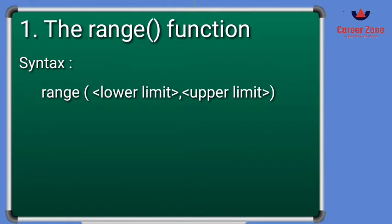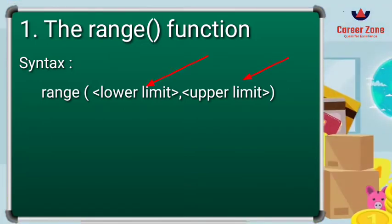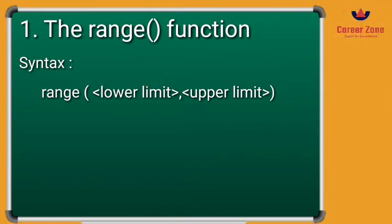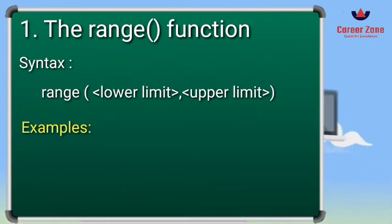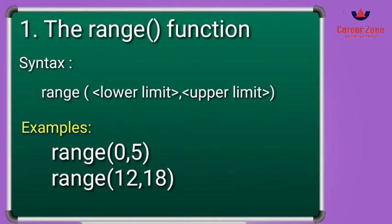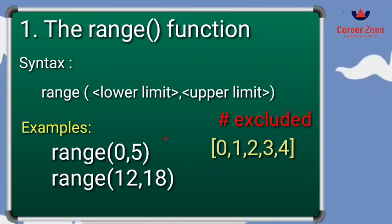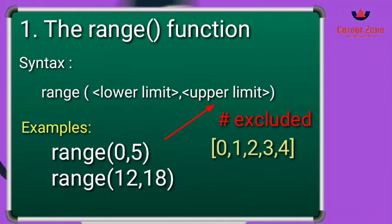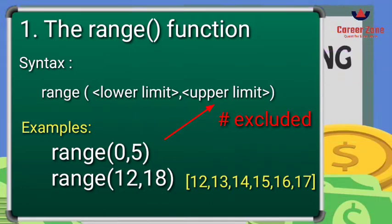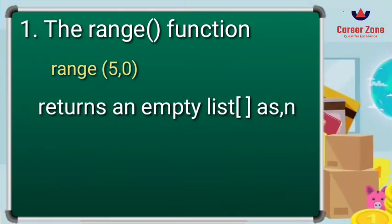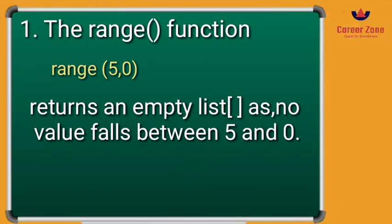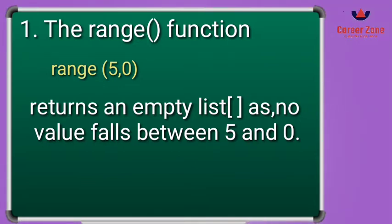Let's see the syntax of the range function. You can see here that we write range with a lower limit and upper limit, and both need to be integer values. For example, range(0, 5) means the values will be printed starting from 0 to 4, because the upper limit is excluded. I have written range(12, 18), which means the values will be printed starting from 12 till 17. But if you write range(5, 0) where the lower limit is bigger, this is going to print an empty list.